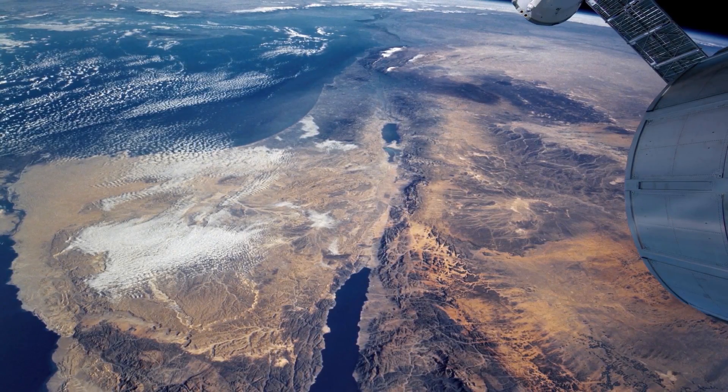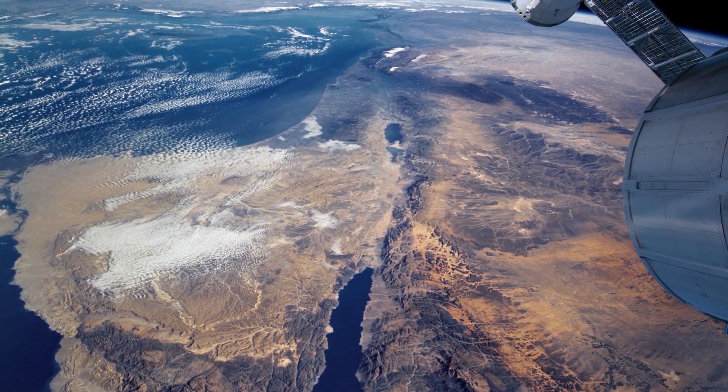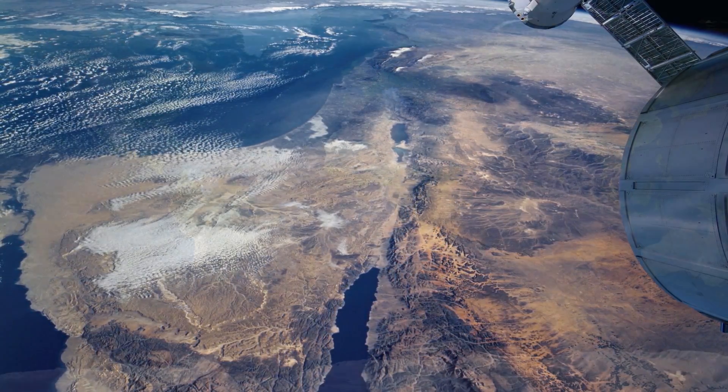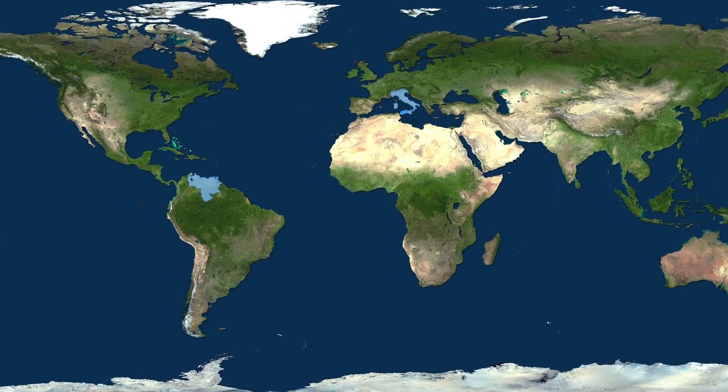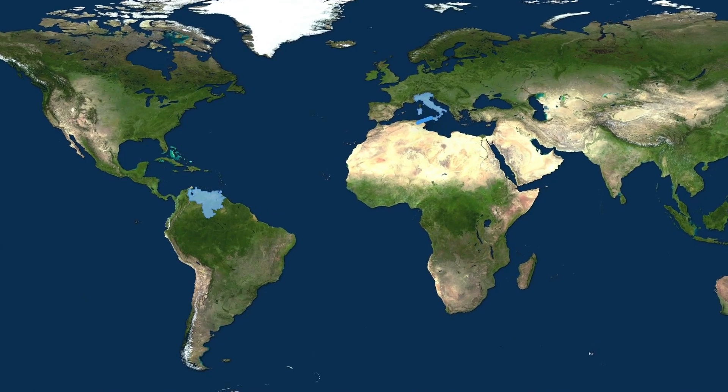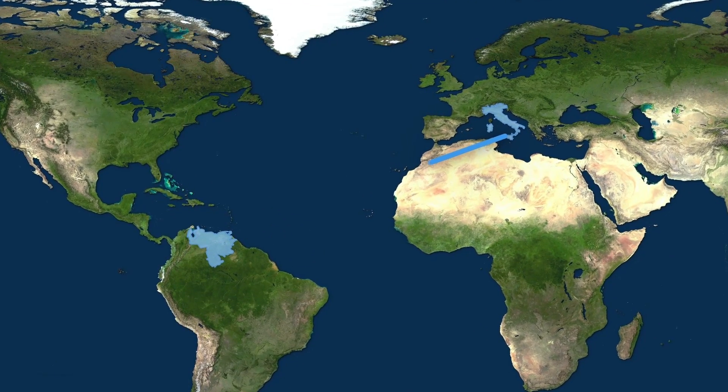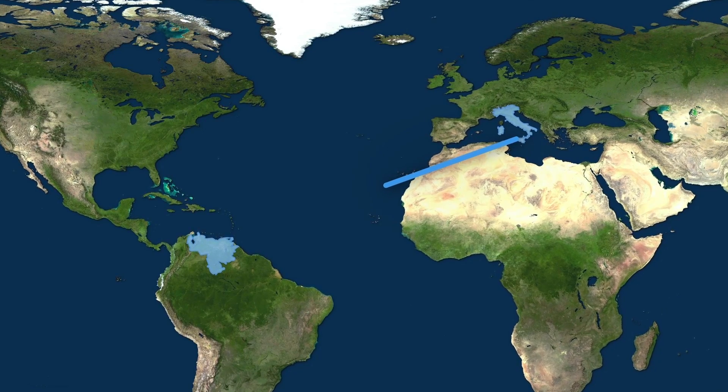But first, I need to share with you some equally interesting lines between points that you probably would never imagine by simply looking at a map. And first among those is the straight line across water connecting Italy with Venezuela. Yes, that's right. On a map, this looks dumb, but here's how it actually works out in reality.